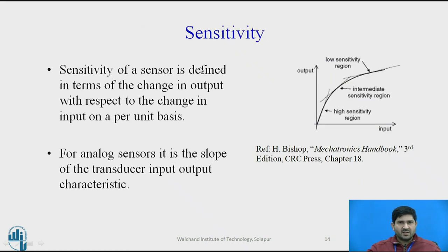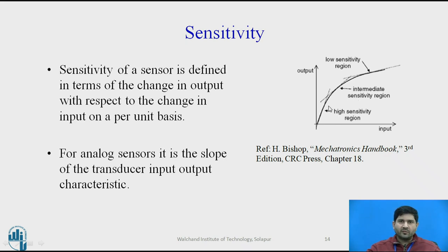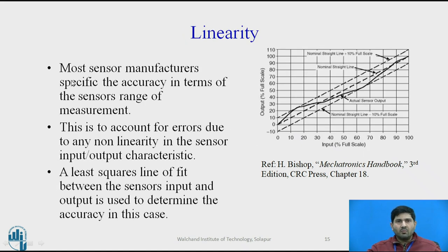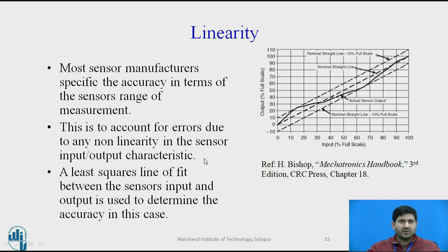Sensitivity is defined as the change in output with respect to the change in input on a per-unit basis. For analog sensors, it is the slope of the transducer input-output characteristics. Sensitivity can vary across the measurement range — there can be regions of high, medium, and low sensitivity. Regarding linearity, most sensor manufacturers specify accuracy in terms of the sensor range. A least-squares line of fit between the sensor's input and output is used to determine accuracy, accounting for any non-linearity, which is why accuracy is often expressed as a percentage of the measurement range.